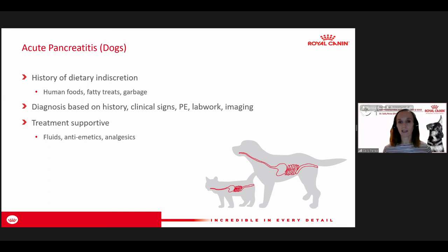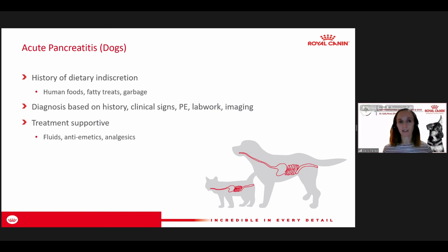Once you have a diagnosis of pancreatitis, treatment is supportive — many of these patients may be severely dehydrated and need hospitalization. Fat restriction is one of the key nutritional approaches, as fat is a very strong stimulus for the pancreas, so we want to limit that stimulus while it's inflamed. A highly digestible diet is important. When looking for a low fat diet, weight loss diets are not great options because they're usually high in insoluble fibers and have low energy density, making them less suitable for critical care cases.